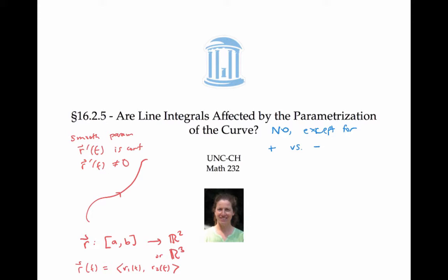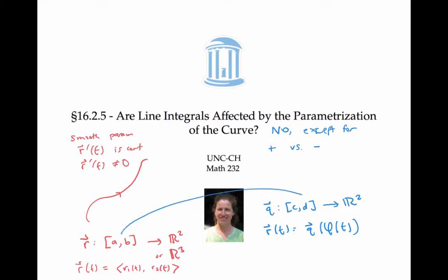A nice fact about smooth parameterizations that I won't prove is that they're invertible. This implies that if we have another parameterization q taking another interval, say [c, d] to R², then we can rewrite r(t) as q(φ(t)), where φ is some function that takes the interval [a, b] to the interval [c, d]. We can think of φ as matching up points in [a, b] and [c, d] that hit the exact same point on the image curve. This is called a reparameterization of the curve.